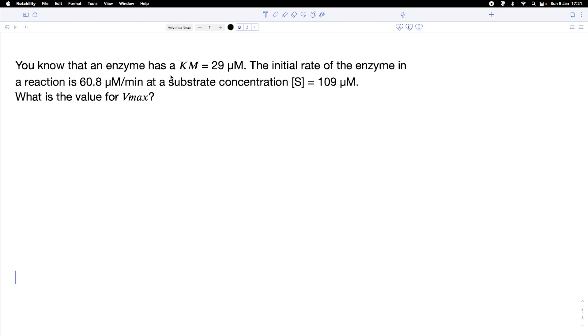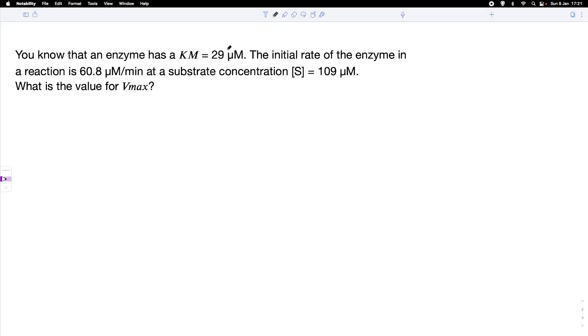Let's first write the Michaelis-Menten equation. V equals Vmax times the substrate concentration divided by Km plus the substrate concentration.